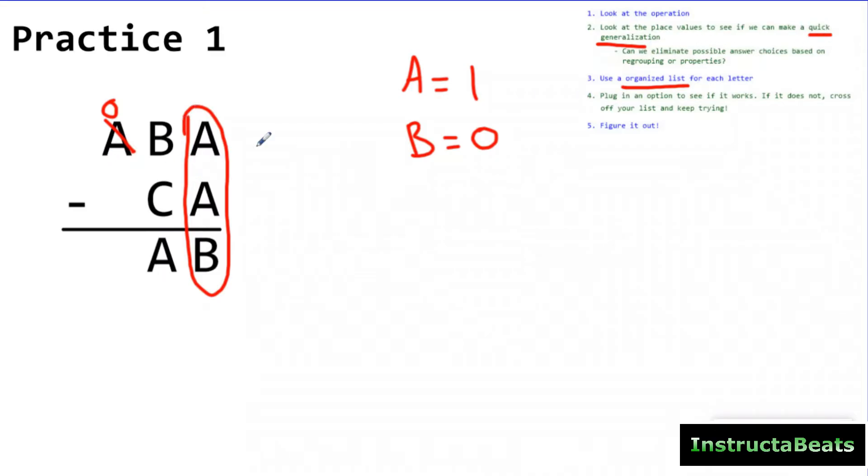Now there's only one other letter left. So the best thing to do would be to plug in my numbers. One, zero, one. I know B is zero. I know A is one. So this has to be 101 minus a number I don't know. I know A has to be one. And this has to be one and zero. So the difference was 10. So I didn't even make an organized list for here because I didn't need to. I'm just going straight to plugging in my options and see what works.